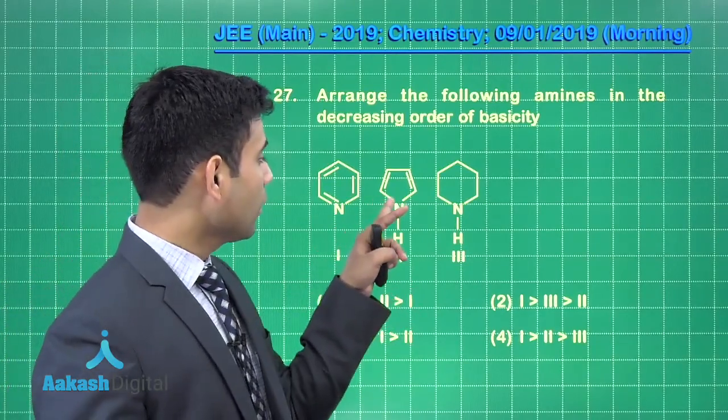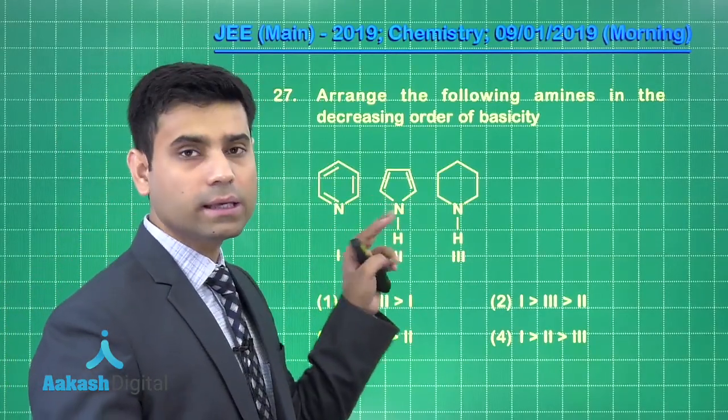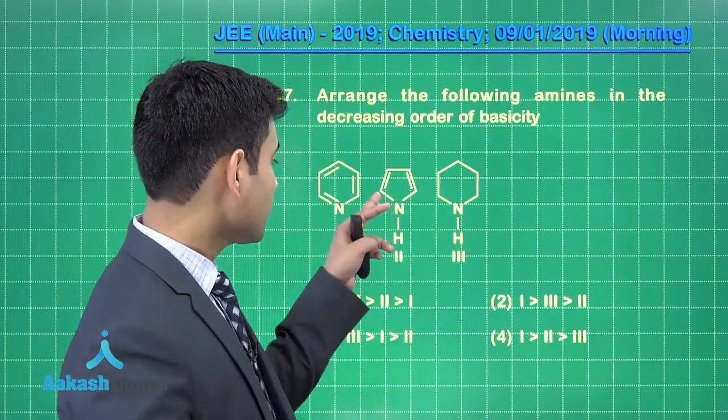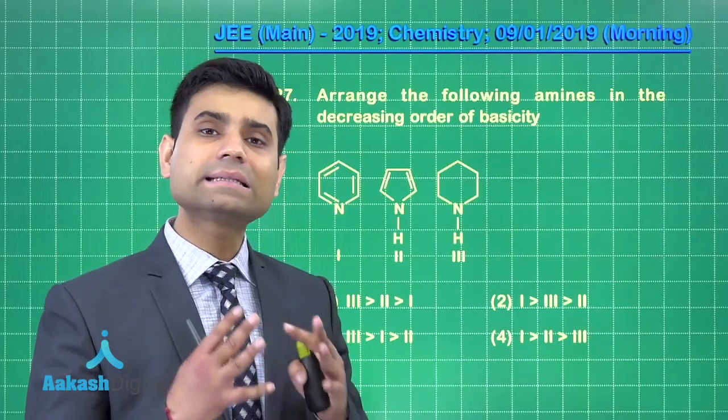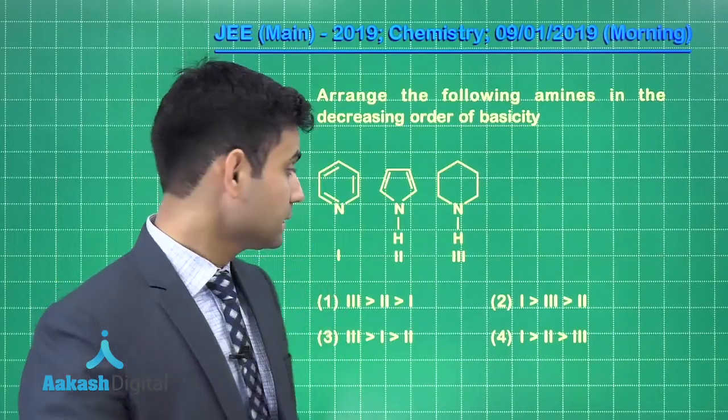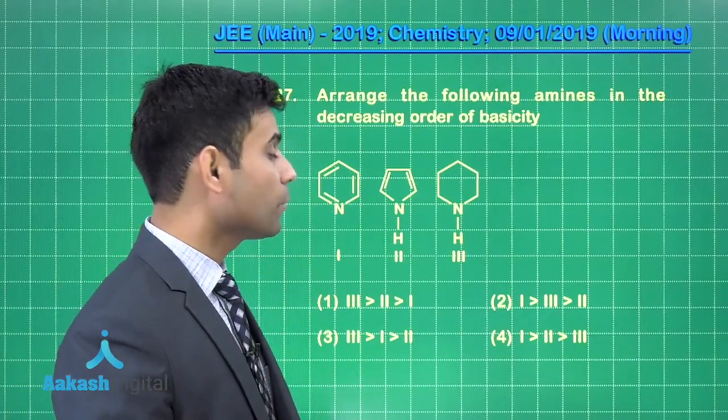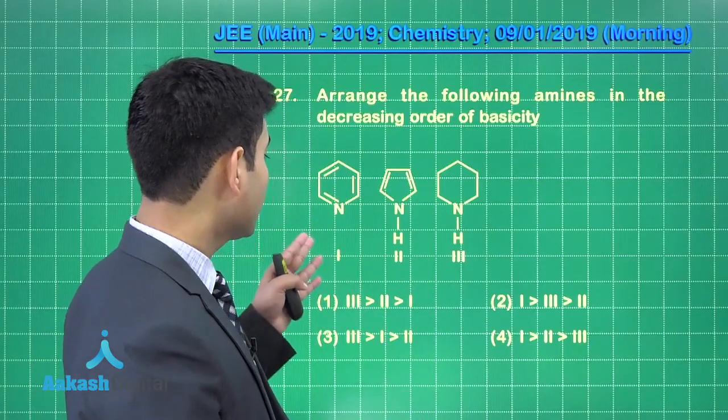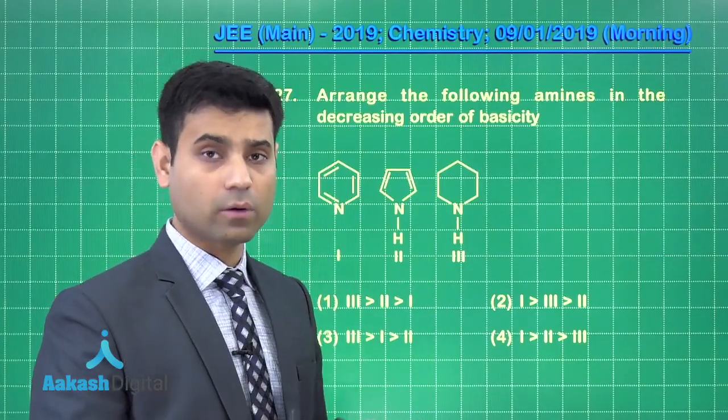In the pyrrole the lone pair will be involved in the resonance. It must be involved. Why? Because those two electrons are necessary for aromatic character of pyrrole. Hence the maximum basic strength or basicity will be for piperidine then we will have pyridine and minimum for pyrrole.